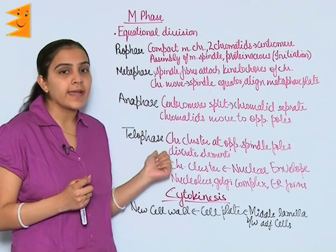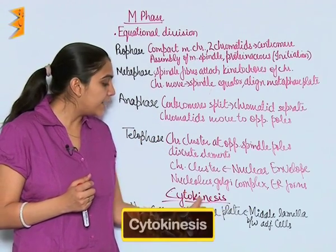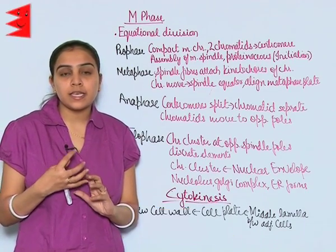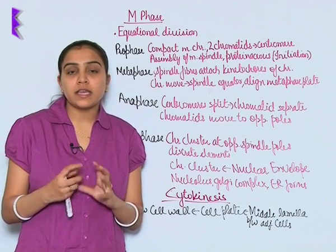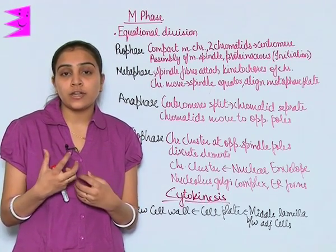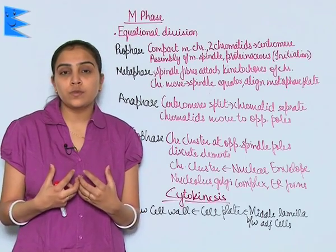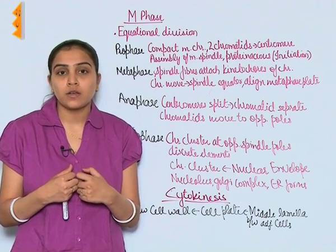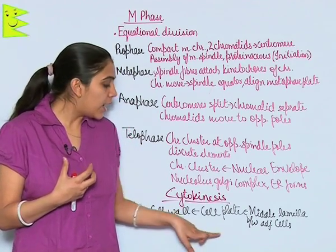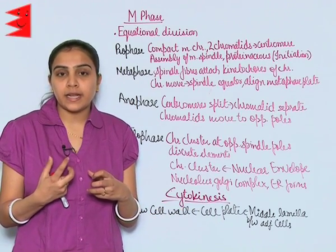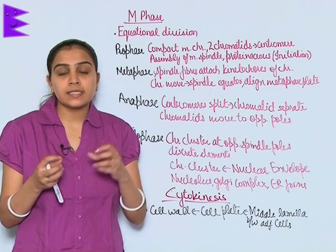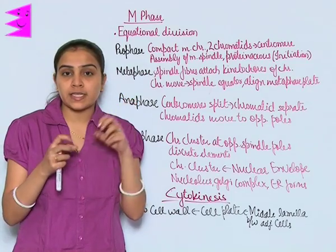Cytokinesis occurs as mitosis is taking place. Not only is the genetic material duplicating, but other cytoplasmic components are also duplicating as two new daughter cells form. A new cell wall starts to form around the cell plate, and this cell plate is nothing but the middle lamella between two adjacent cells, which divides a single parent cell into two daughter cells.